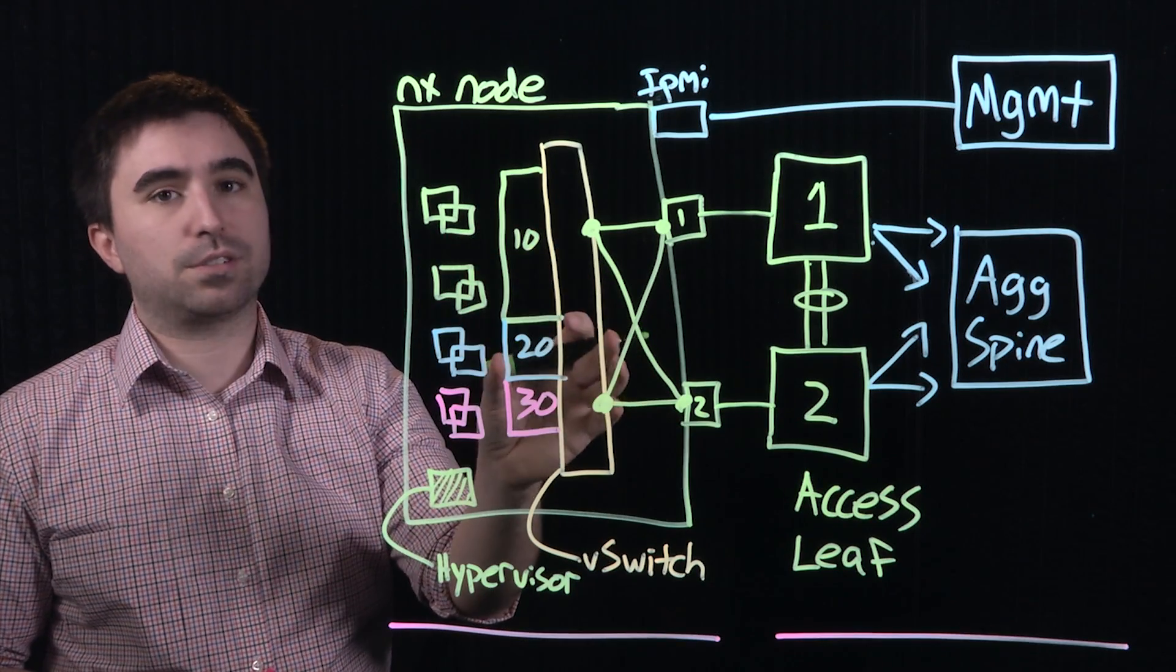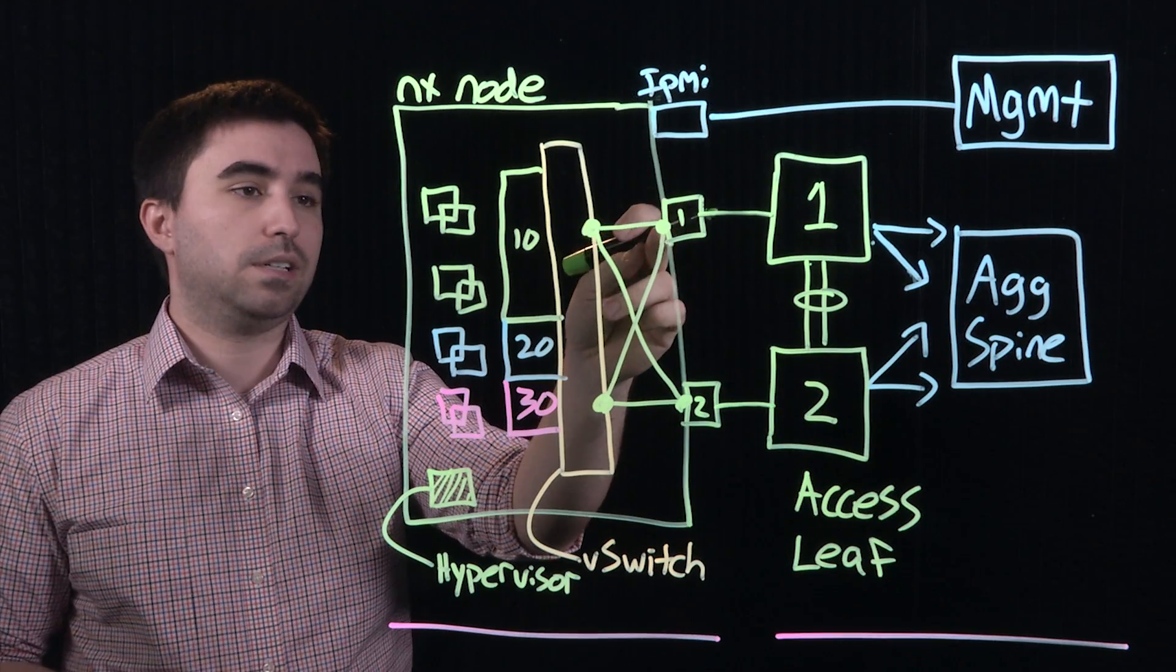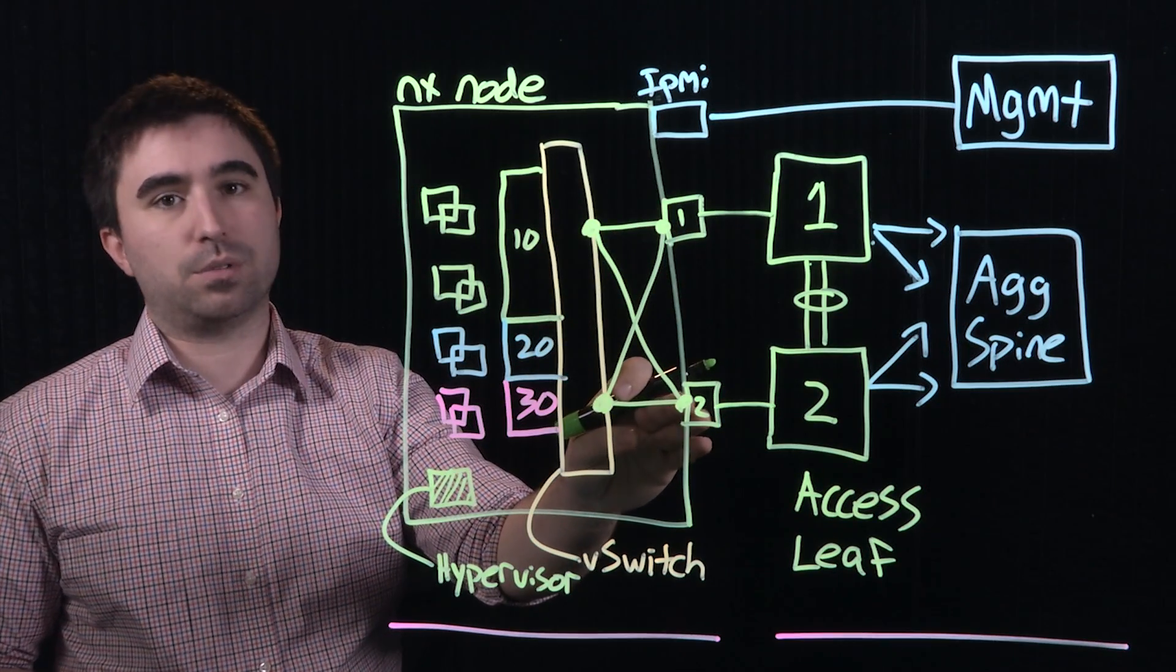In a software or hypervisor controlled failover, if I lose one of these virtual links, all traffic will automatically be routed to the second virtual link.